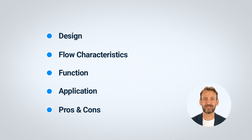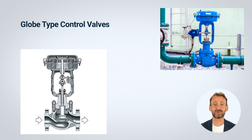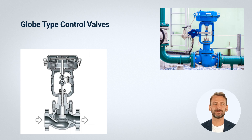Design: globe type control valves have a linear motion stem and plug shape that moves perpendicular to the flow path to control flow. The body of a globe valve is typically cylindrical with a globular shape — hence the name globe valve.